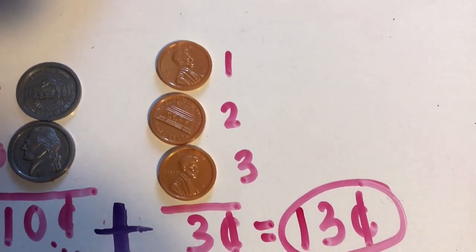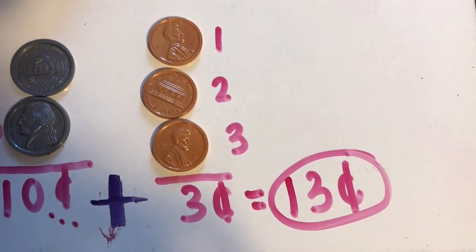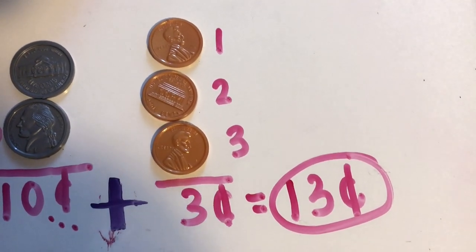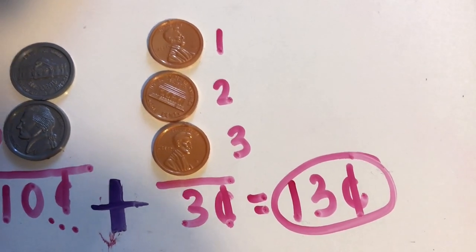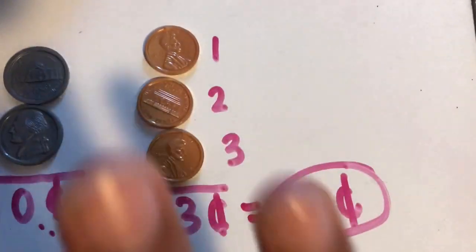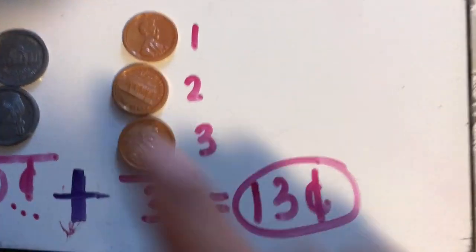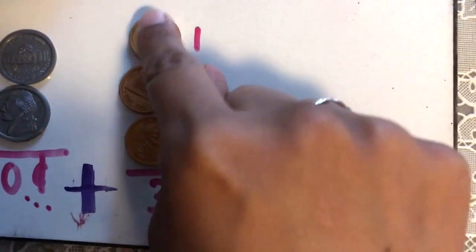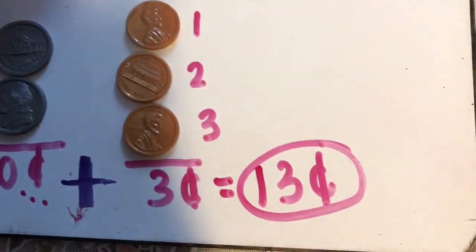One more time: sort my coins, add same coins, add my total. Those are the three steps to help us add mixed coins — different types of coins.